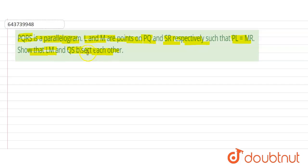So for this let's first draw a parallelogram. So suppose this is a parallelogram and we name it as PQRS. So this is P, this is Q.